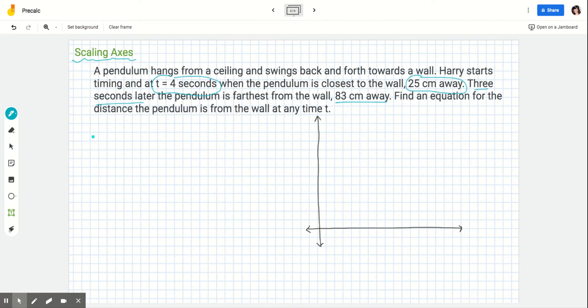The first thing we want to do is determine the independent and dependent variables. In this scenario, we're talking about the distance from the wall as it compares to time. The independent variable is time measured in seconds. The dependent variable is distance from the wall measured in centimeters.